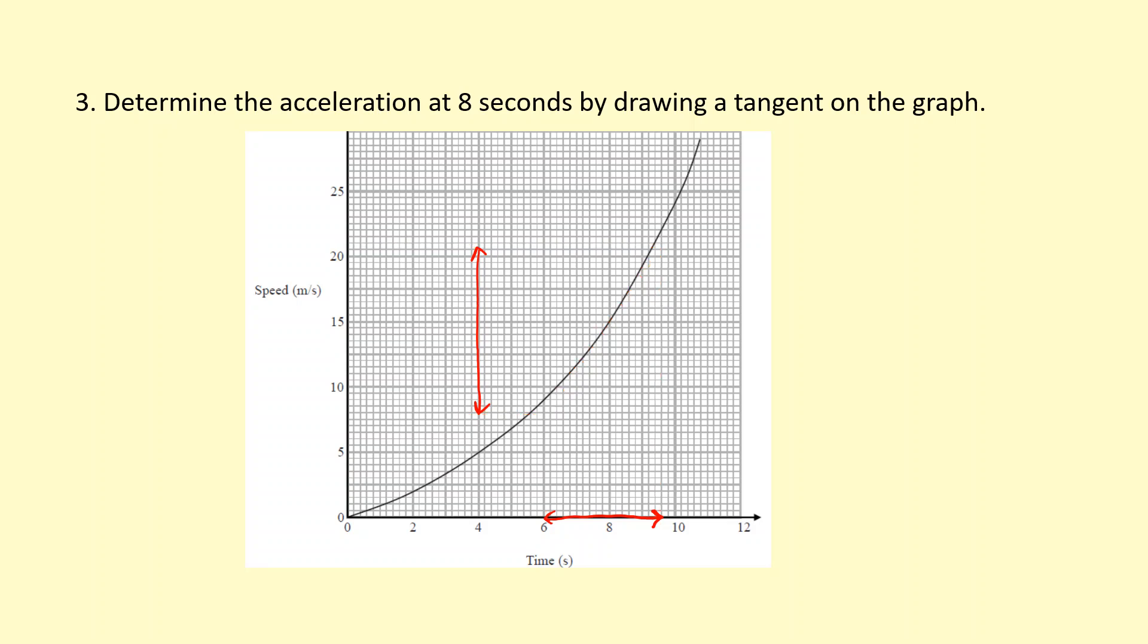So someone who knows what they're doing would actually draw a much longer tangent like this and figure out the change in y and the change in x, like that. So you can see those changes are bigger. So even if you're off by a small square, the percentage uncertainty is still going to be smaller because you've got a larger reading.